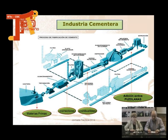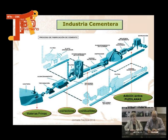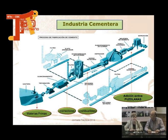En la fabricación del cemento, aquí tenéis un esquema de dónde se pueden meter residuos. En las materias primas, en vez de coger materias de cantera, podemos meter residuos en el horno para después obtener cemento. También podemos, en vez de usar gasoil, petróleo o carbón, meter neumáticos como combustible del horno. Y después, cuando ya hemos fabricado el cemento, que al salir del horno se llama clinker, en ese cemento se tienen que añadir otros materiales, y ahí también podemos meter residuos.